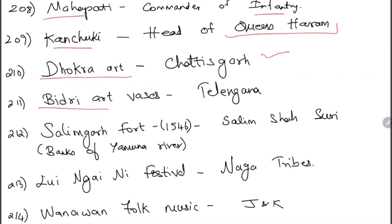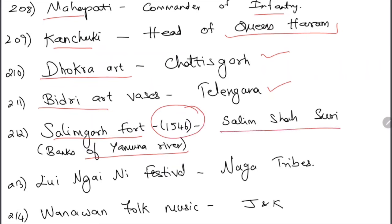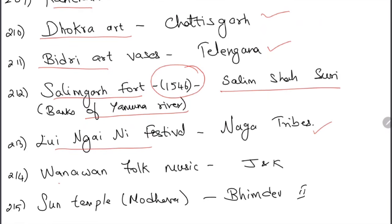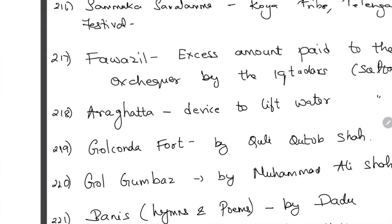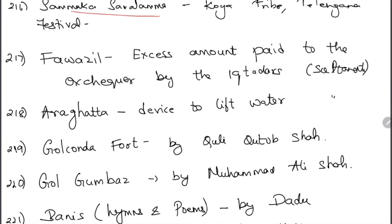Gaddiya Pakika were inspectors of the royal kitchen. Ranabhadraganka were officers in charge of arms and ammunition stores. Mahapati was commander of infantry. Kanchuki was head of the queen's harem. Dokra art is in Chhattisgarh. Bidri art involves making flower vases and is in Telangana. Salimgarh Fort is in Delhi on the banks of the Yamuna, built in 1546 by Salim Shah Suri, son of Sher Shah Suri. Liuloungani festival is celebrated by the Naga tribes.